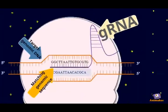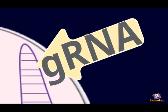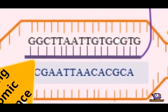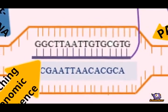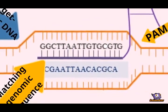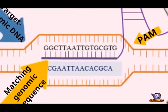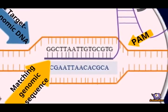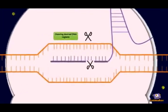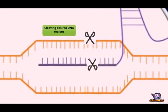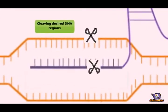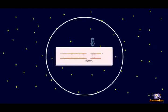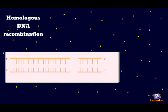The gRNA primarily directs the Cas9 endonuclease to the target sequence. The targeted sequence is directly upstream of a PAM site, through complementary base pairing of the gRNA to genomic DNA. Subsequently, Cas9 endonuclease cleaves the desired DNA regions, forming a gap in the double-strand DNA.